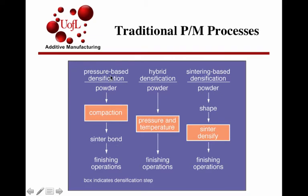One traditional powder metallurgy method is to pour the powder into a mold, compact under high pressure, take out the green part and heat it to sinter bond between the particles, then have finishing operations.